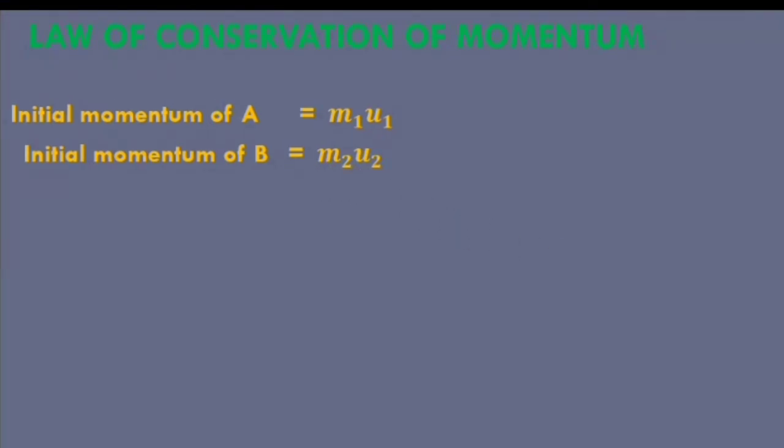Law of Conservation of Momentum. Suppose an object A has mass M1 and its initial velocity is U1. An object B has mass M2 and its initial velocity is U2. According to the formula of momentum, the initial momentum of A is M1U1, and initial momentum of B is M2U2. Suppose these two objects collide. Let the force on A due to B be F1. This force will cause acceleration in A and its velocity will become V1.